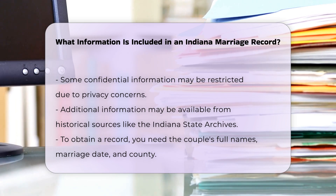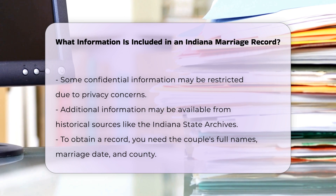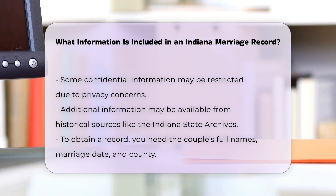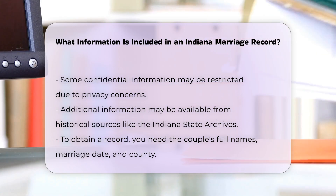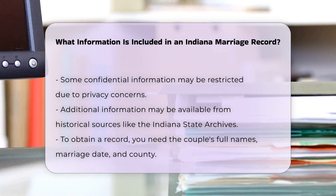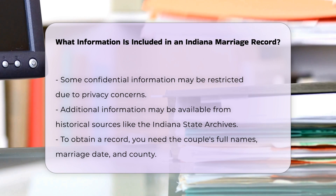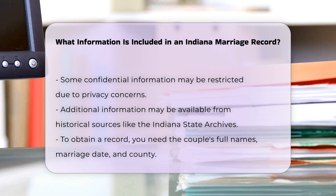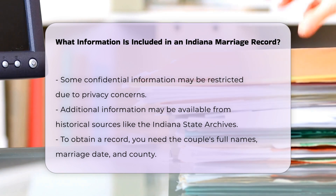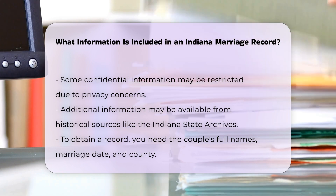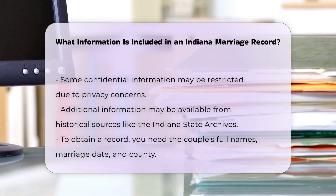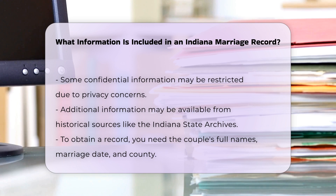Additional information. Depending on the source and the period of the marriage, additional information might be available. For example, older records might be found through the Indiana State Library's Genealogy Division or the Indiana State Archives, which house historical records.